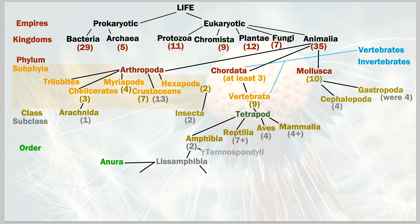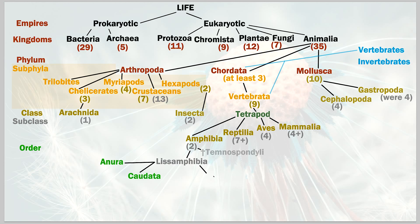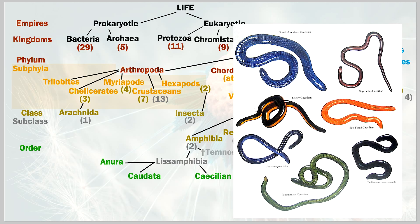The second order — caudata — includes newts, salamanders, and mud puppies. The third order, less related to the other two, is caecilians — the wormy-looking ones. They're vertebrates, not worms, require moisture like most amphibians, and come in many different colors.